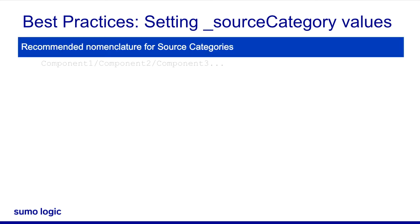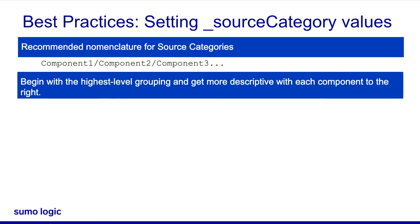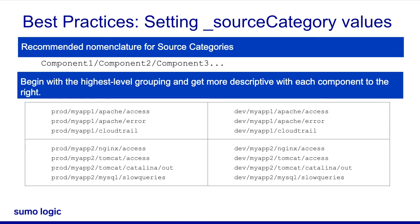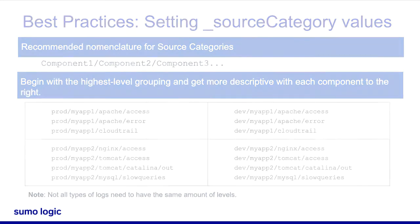You can use source categories in the user's search filter. The four boxes provide examples of how you can name your source category metadata. Note that the more specific source-level tags override the more general collector-level tags.